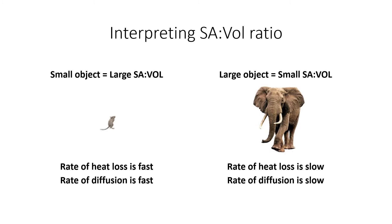A small object will have a large surface area to volume ratio, and a large object will have a small surface area to volume ratio. A large object has a really big volume and a really big surface area, whereas a small object has a large surface area relative to a very small volume. If you have a small object with a large SA:V ratio, diffusion will occur really fast — if you put something in the very center of the small cube, it reaches the outside much quicker.